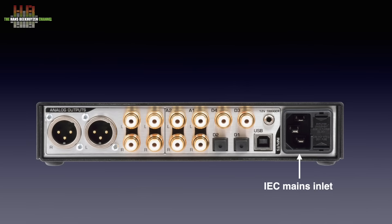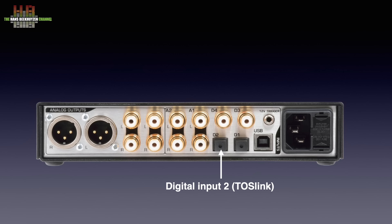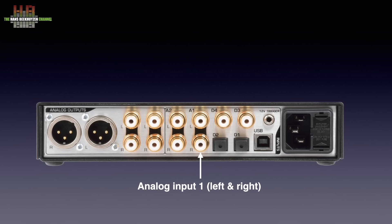On the rear, the fuse holder and the IEC mains inlet are combined. Next to it are the 12-volt trigger input and output, which cleverly detects whether an external trigger wants to switch on the DAC or the DAC-3 needs to send 12 volts to switch on a device like a power amplifier. Then the digital inputs: USB-B for using a computer as source; the optical inputs using TOSlink connectors labelled D1 and D2; and two coax inputs on RCA labelled D3 and D4. The USB-B input and the coax inputs accept sample rates up to 192 kHz; the optical inputs up to 96 kHz.